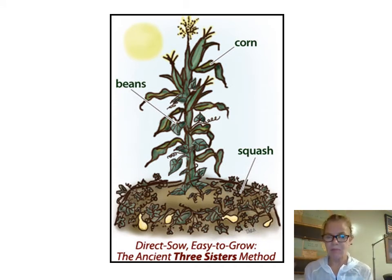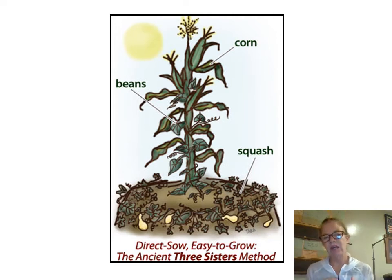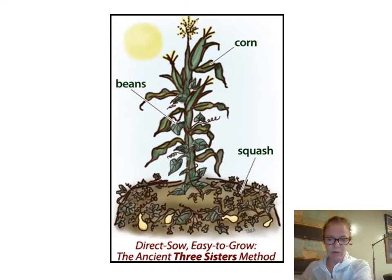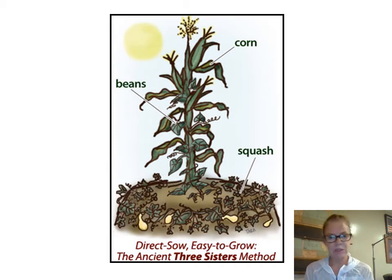They were having a population boom at the time the Europeans came. But of course the Europeans would come and it was going to be devastating. Europeans took all these new crops back to Europe and started planting them there, creating a population boom in Europe. And a lot of those people came here and brought more diseases. So it was very good for the Europeans but very bad for the indigenous population.